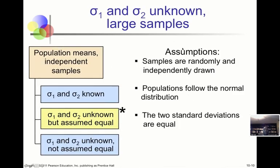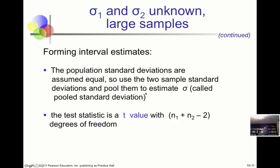When σ₁ and σ₂ are unknown, we have two sub-cases: unknown with large sample sizes, and unknown with small sample sizes. Key assumptions are that the populations are normally distributed, the variances are equal, and samples were randomly chosen. For the small-sample case, we use the t-distribution with degrees of freedom n₁ plus n₂ minus 2, and we must assume the variances are equal.